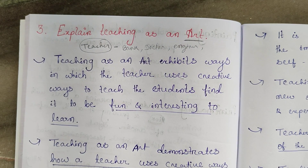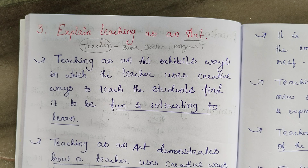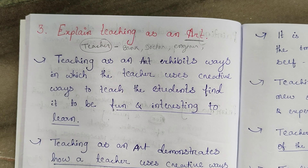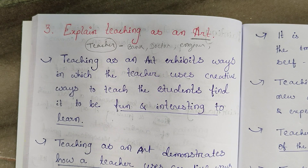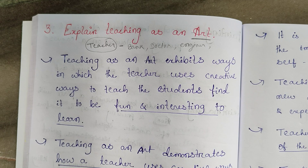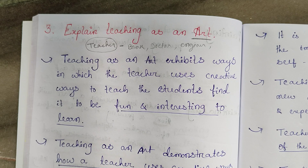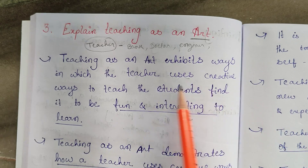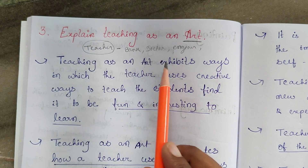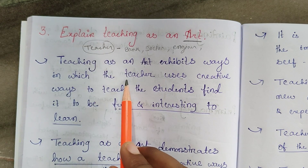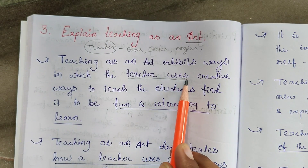Teaching is called an art because when a teacher comes to class, there is not just one child — there are many students. All students are different; their understanding and learning styles are different, their characters and qualities are different. Some will be good academically, some will not, some will be weak. So taking all students forward together — it is really difficult.